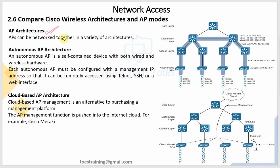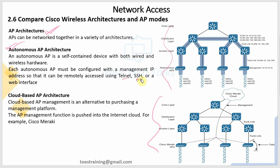Let's start today's session: Cisco Wireless Architecture and AP modes. We already covered AP types briefly in Network Fundamentals. AP means Access Point. There are two major types: Autonomous AP and Lightweight AP. The key difference is that Lightweight AP is managed by a controller, while Autonomous AP is self-contained.